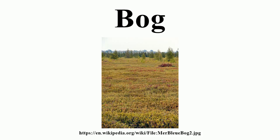Bog habitats may develop in various situations depending on the climate and topography. One way of classifying them is based upon their location in the landscape and their source of water. Valley bogs develop in gently sloping valleys or hollows. A layer of peat fills the deepest part of the valley, and a stream may run through the surface of the bog. Valley bogs may develop in relatively dry and warm climates, but because they rely on ground or surface water, they only occur on acidic substrates.